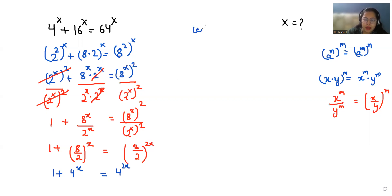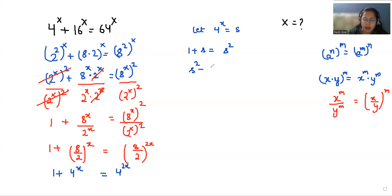Let's make a substitution: let s = 4^x. So 1 plus s equals s², or we can write this as s² minus s minus 1 equals 0.